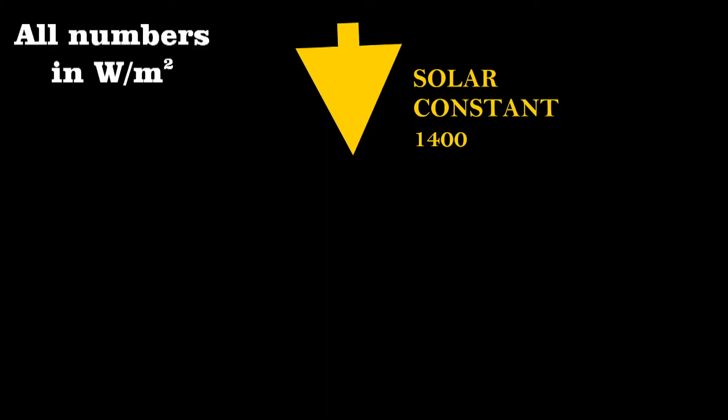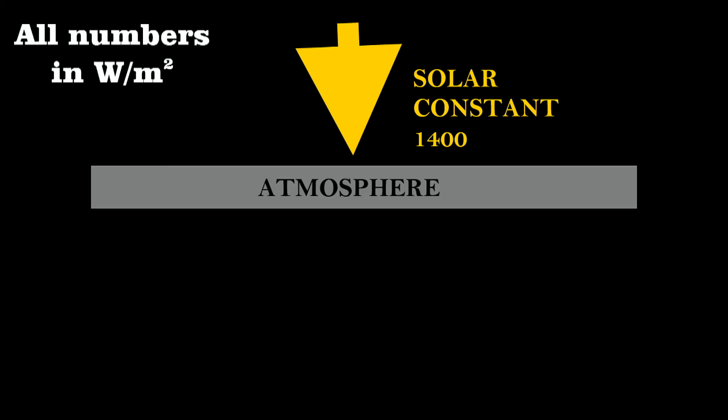So we have the solar constant which is 1400 watts per meter squared. This is what a solar panel will be able to absorb from the sun on earth if we had no atmosphere. But since we do, only about half of that number actually reaches the earth's surface and is absorbed.